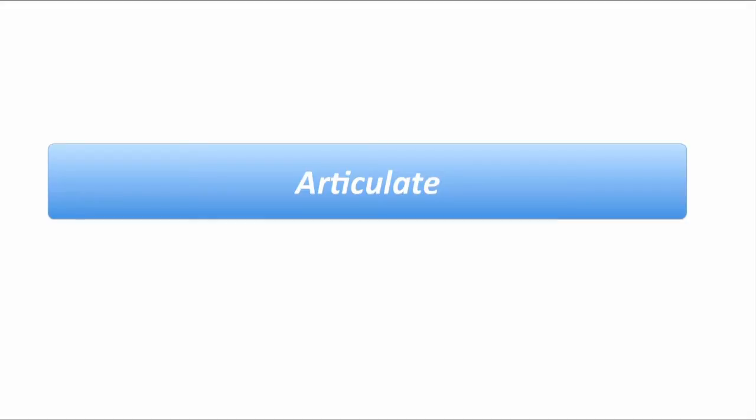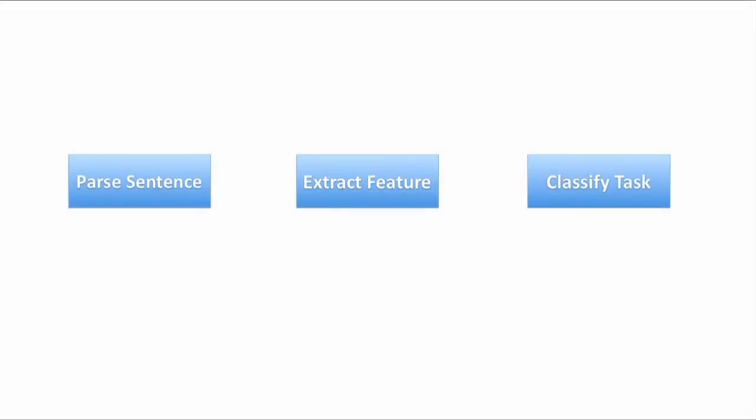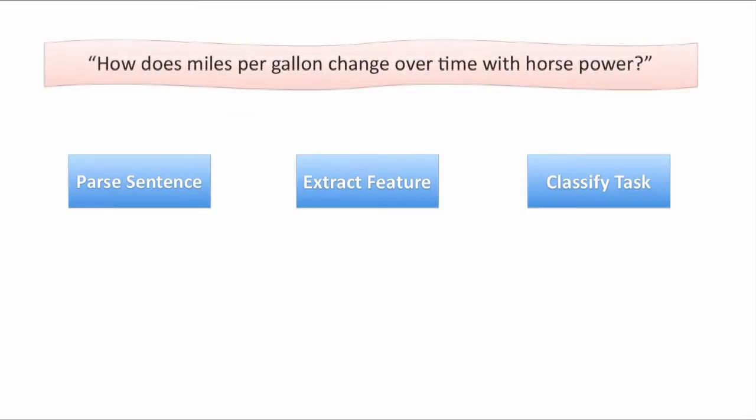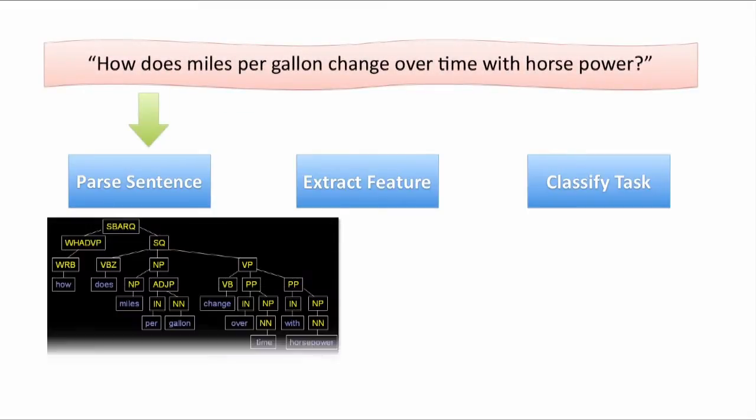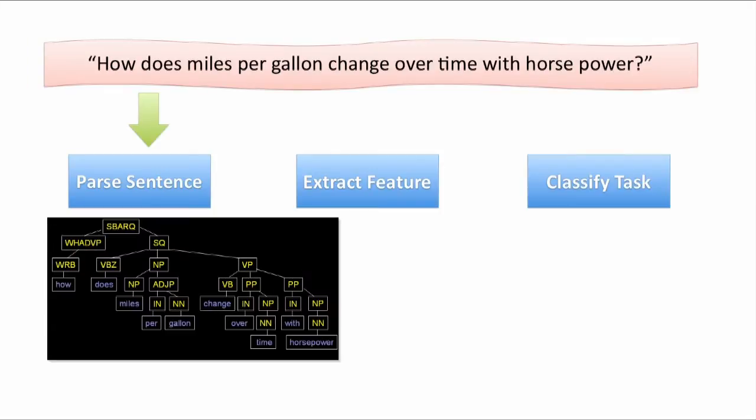Articulate incorporates a natural language parser with machine learning algorithms to translate spoken language. The user's input sentence is parsed into a syntactic tree, tagged with part of speech labels, from which a feature vector can be extracted to represent the query.